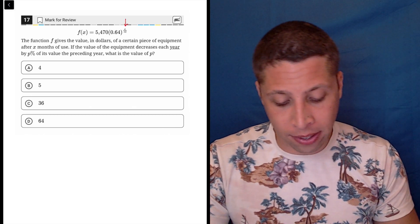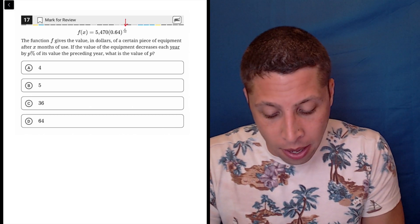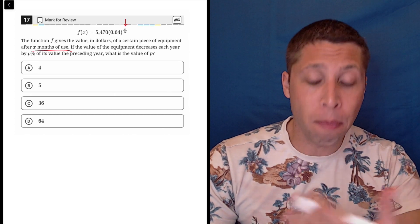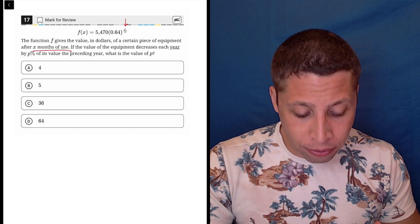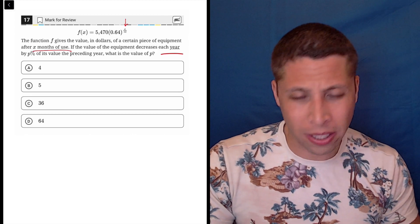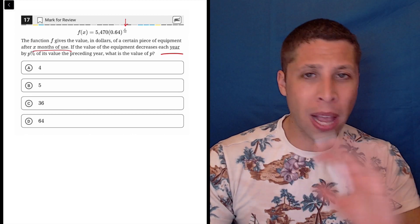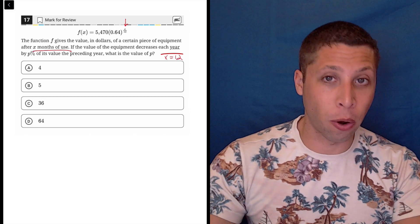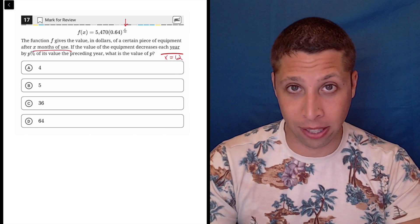The reason that exists is that exponent represents the number of months, the x represents the number of months that are passing. However, they're asking what's going to happen every year. So right away, my brain is like, okay, well, if x equals 12, then that's a year. So that probably is going to get factored in somehow.